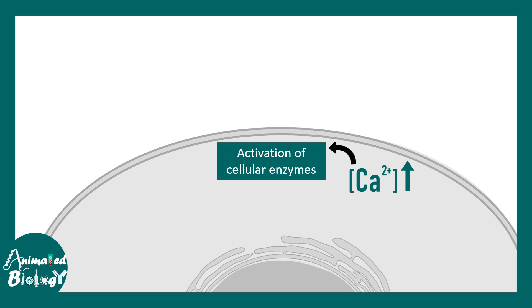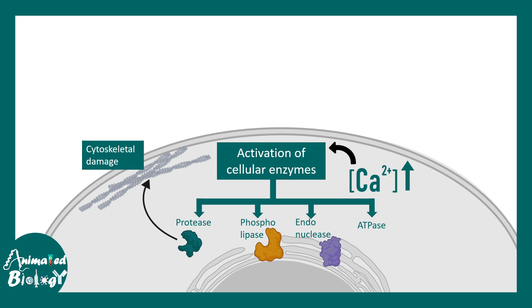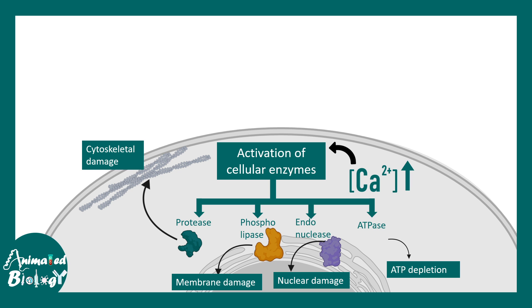There are multiple things that happen when we have too much cytosolic calcium — specifically, activation of many enzymes. These include calcium-dependent proteases, phospholipases, endonucleases, and ATPases, each with their own harmful effects. For example, proteases may cleave cytoskeletal elements causing cytoskeleton damage; phospholipases cause membrane damage by cleaving phospholipids; endonucleases can chop DNA or RNA; and ATPase further depletes ATP. Overall, several cellular aspects are compromised when calcium levels are too high.